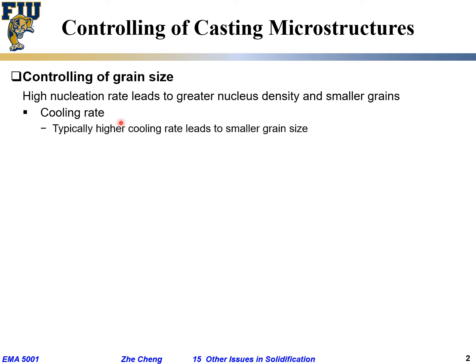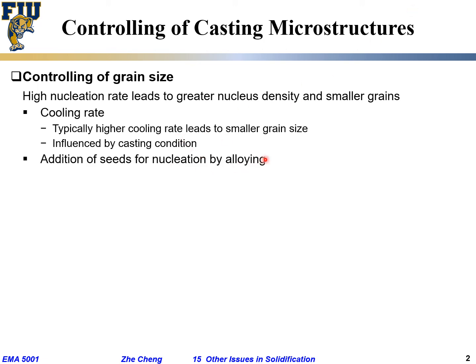One knob you can turn to control grain size is the cooling rate. Typically, a higher cooling rate gives smaller grain size because you have larger undercooling and a greater number of nucleation sites. The second parameter is addition of seeds — for example, through alloying you can add elements into the melt that become preferred seeds for nucleation, artificially creating sites for nucleation, increasing nucleus density, and decreasing grain size.